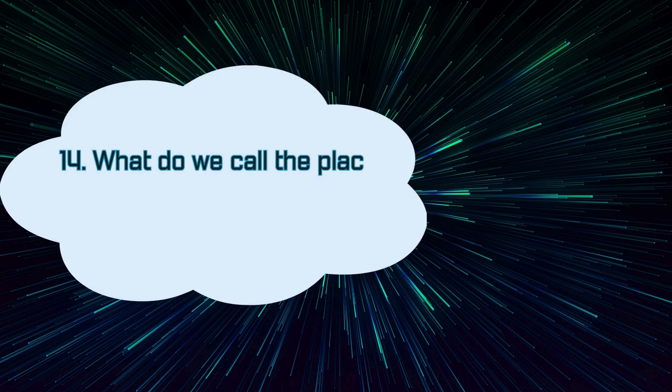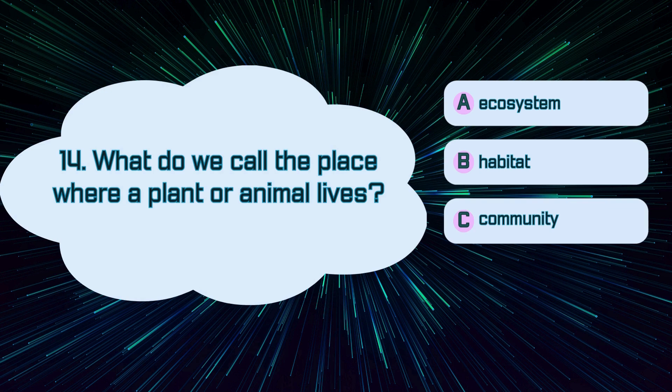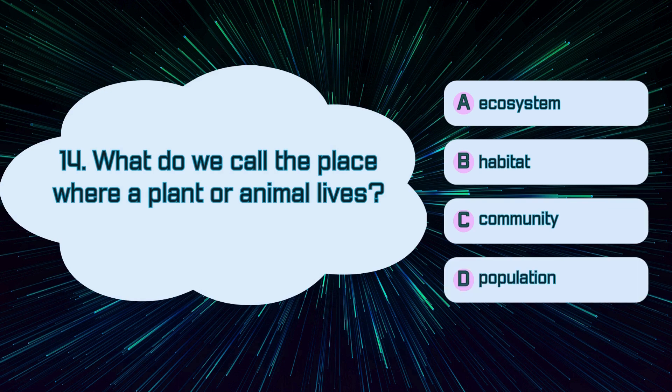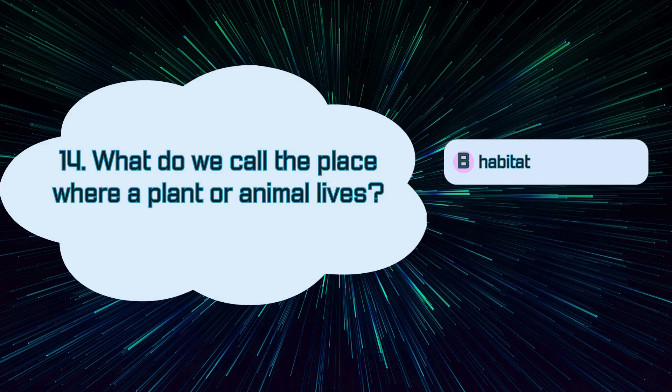Number 14. What do we call the place where a plant or animal lives? A. Ecosystem, B. Habitat, C. Community, D. Population. The correct answer is B. Habitat.